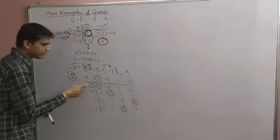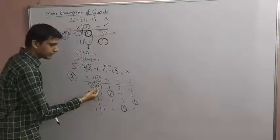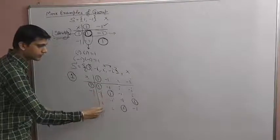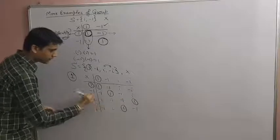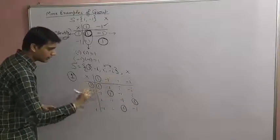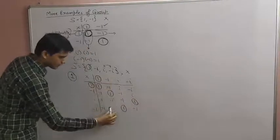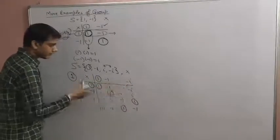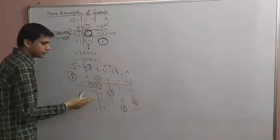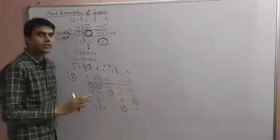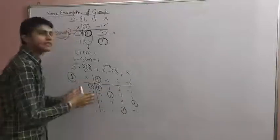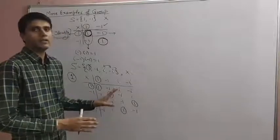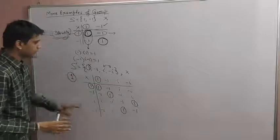To verify commutativity from the table: when any element multiplies from the left, the row result is the same as when it multiplies from the right, reading column-wise. The corresponding rows and columns match exactly, confirming that this set satisfies commutativity.